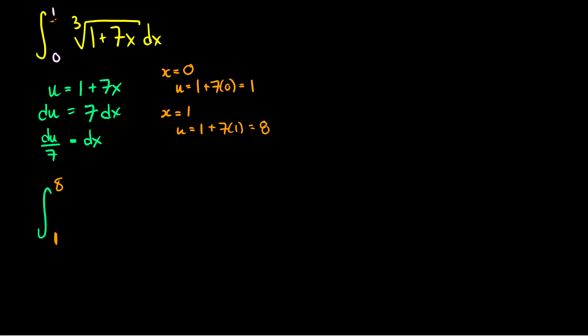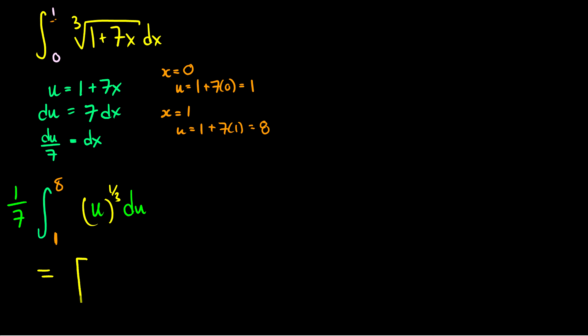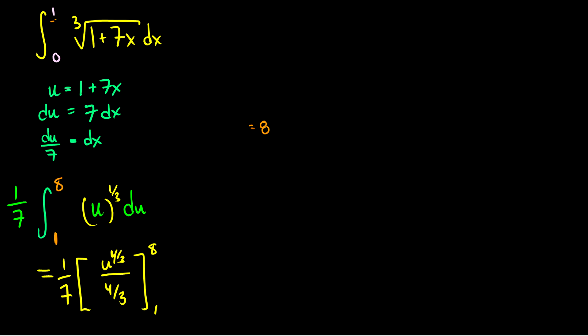Now we can continue with our substitution. This becomes the integral from 1 to 8 of the cubed root of u times du, and of course this is all multiplied by 1/7, which I'm pulling out in front of the integral. Now we can integrate. Writing this as u to the 1/3, the antiderivative is u to the 4/3 over 4/3, evaluated from 1 to 8, all multiplied by 1/7. Because we've changed the limits, we no longer have to substitute u back in for 1 plus 7x.